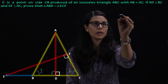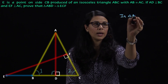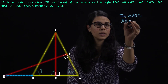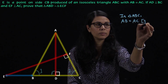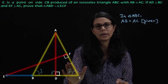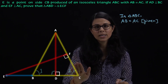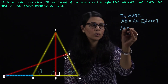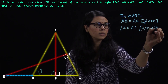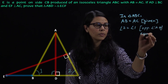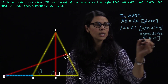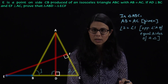In triangle ABC, AB is equal to AC — that is given. AB ke saamne ka angle 2, aur AC ke saamne ka angle 1. Toh angle 2 is equal to angle 1. Iska reason: opposite angles of equal sides of a triangle. Kisi triangle ki equal sides ke opposite angles bhi aapas mein equal hote hain.